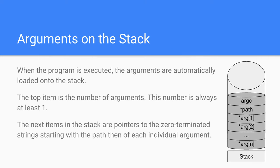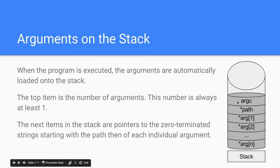So, arguments on the stack. When the program is executed, the arguments are automatically loaded onto the stack. The top item on the stack is the number of arguments — this is always at least one. The next items on the stack are pointers to zero-terminated strings, starting with the path and then each individual argument. At the top of the stack we will have argc, which is just an integer. Then we'll have a pointer — the address to a zero-terminated string.